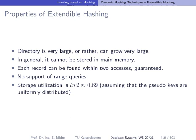So what are the properties of extendable hashing? The directory is very large or can grow very large. It cannot be stored in main memory. So we need to have two disk accesses, one to the directory and then one for the actual page containing the record. We are not able to do range queries which is in most cases the case for hash-based methods, and the space utilization assuming a uniform pseudo-key hash function is around 70%.